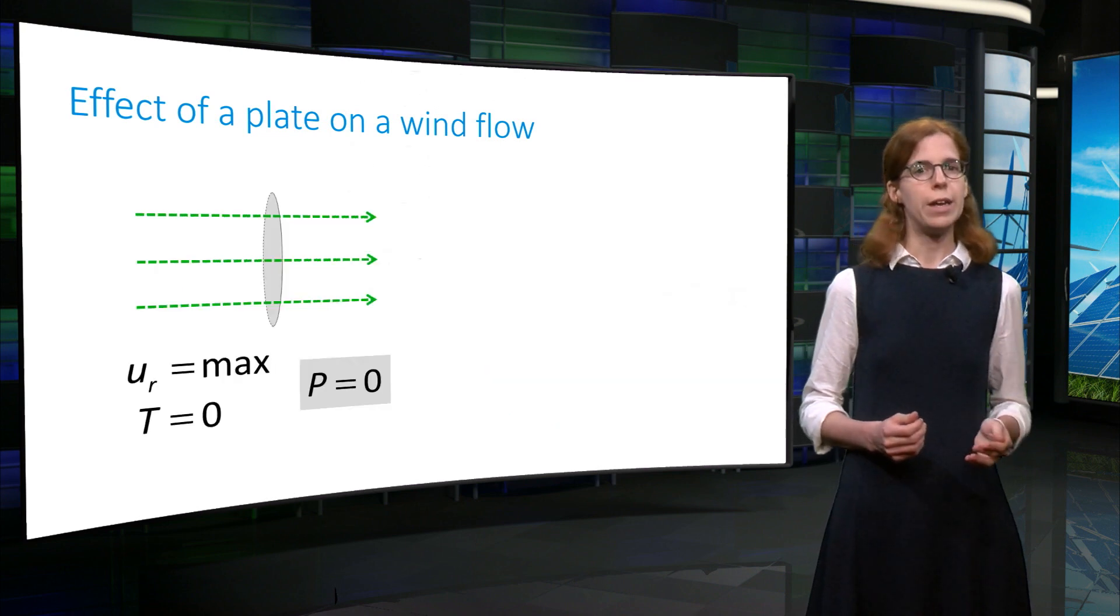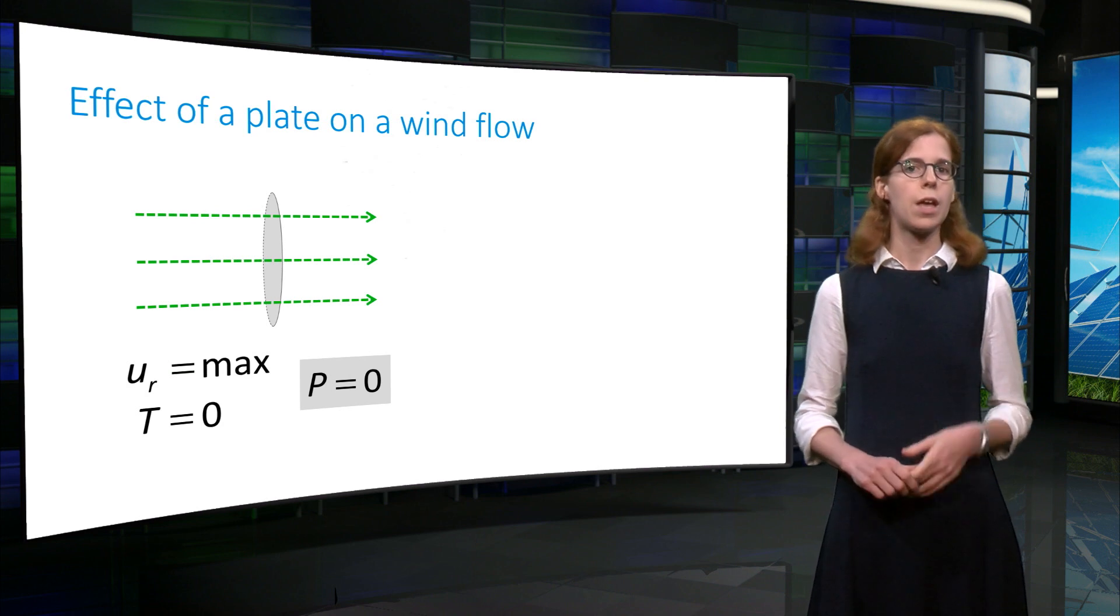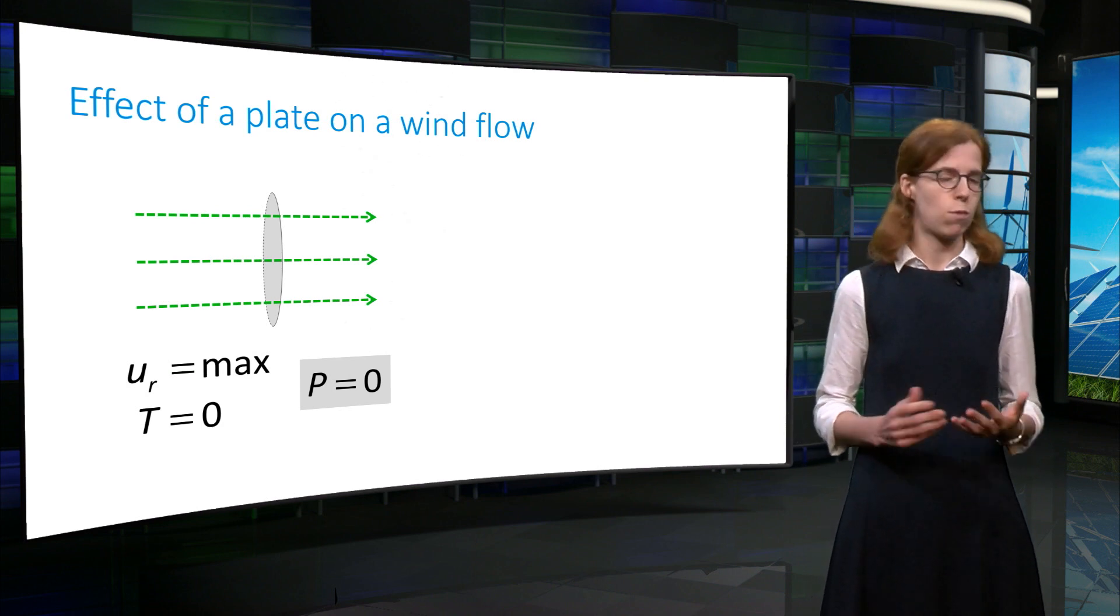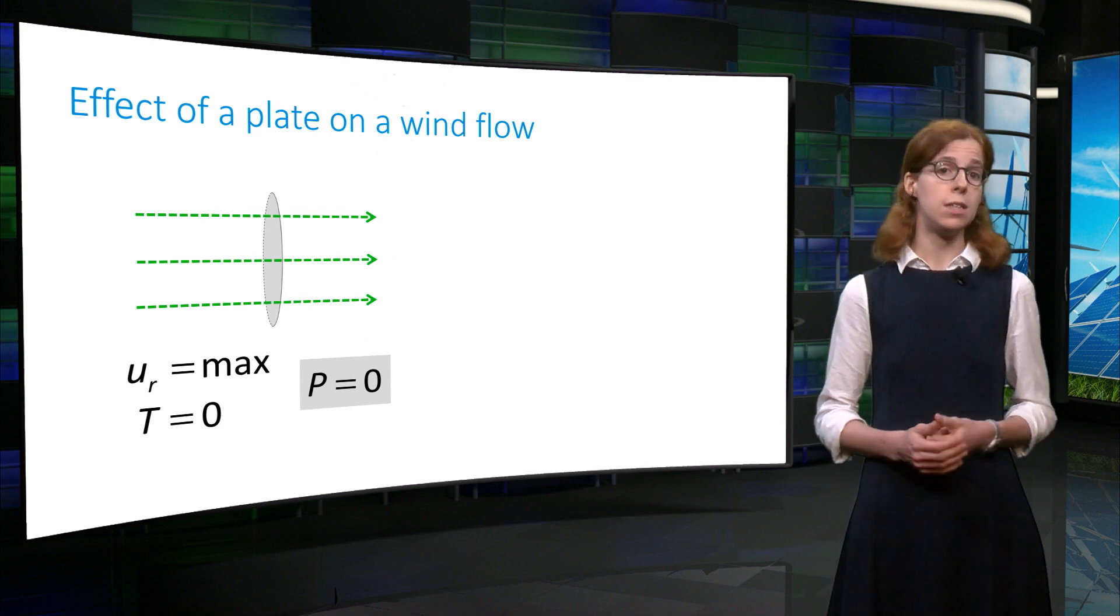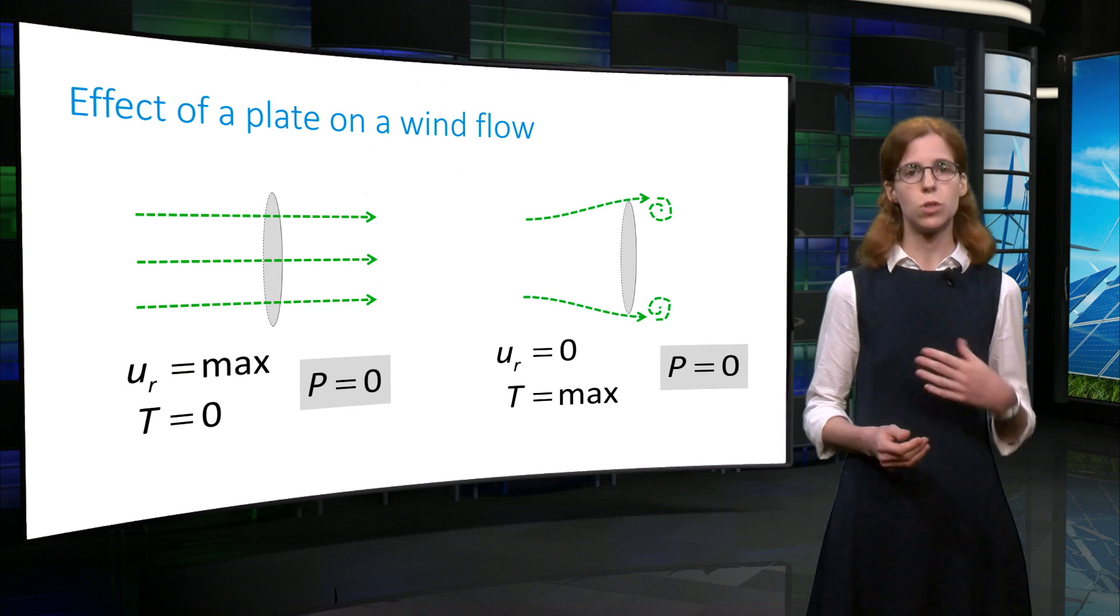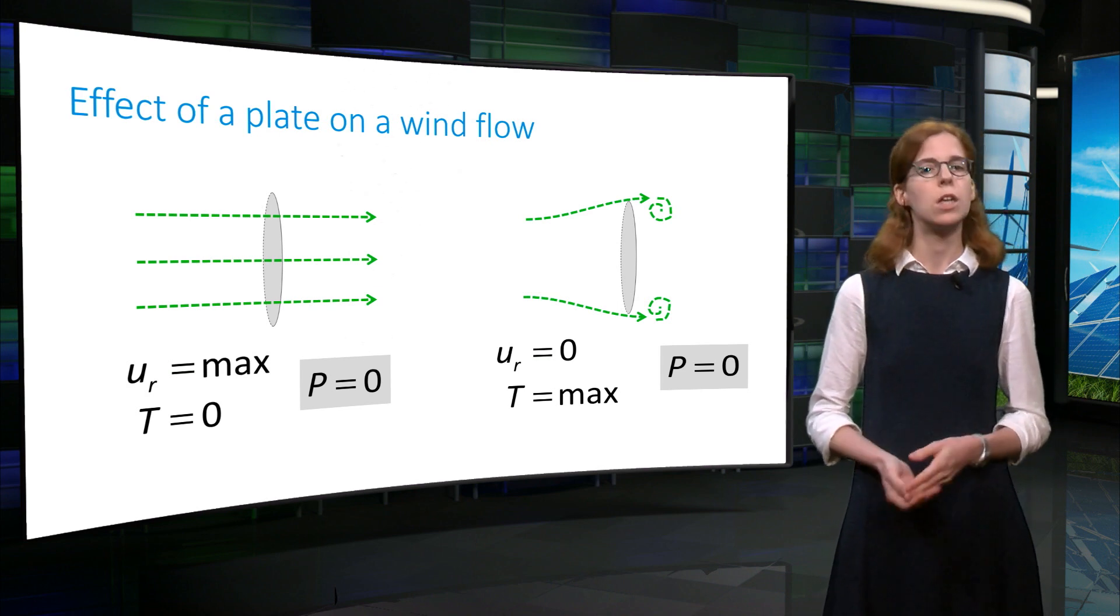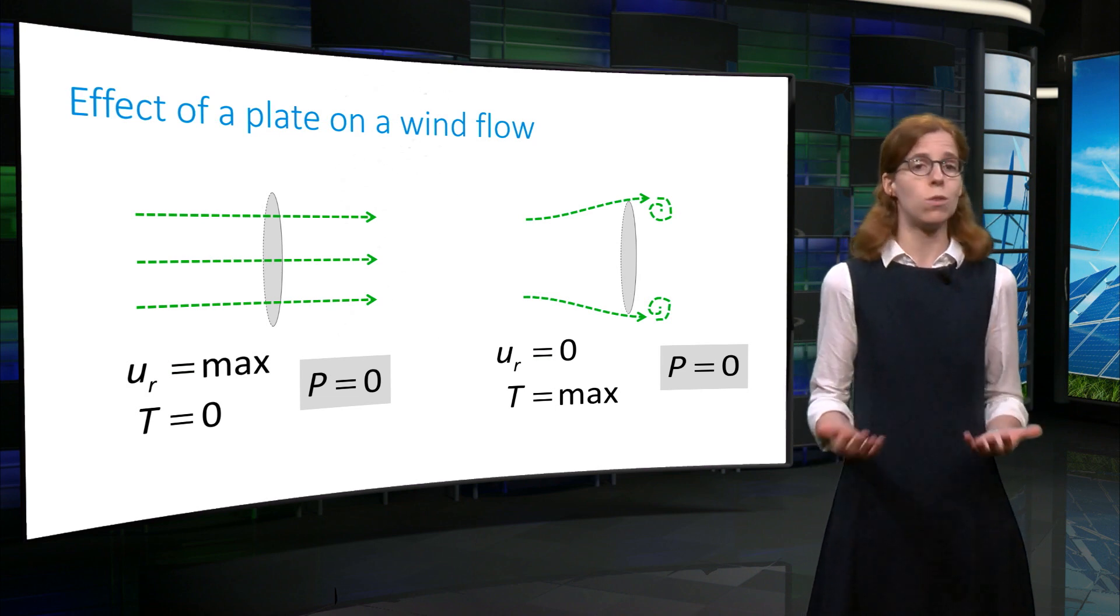So to summarize, we have seen that if the disk does not exert any force on the flow, then the velocity at the disk is maximum, but the power extracted is zero. By contrast, if the force exerted by the rotor is maximum, the velocity at the disk is brought to zero, therefore the power is also zero.